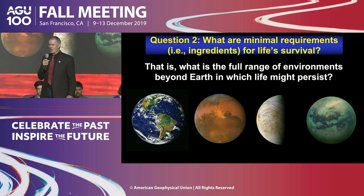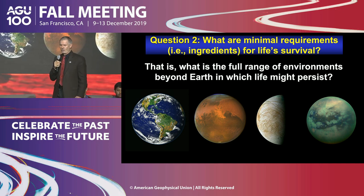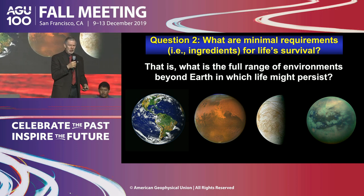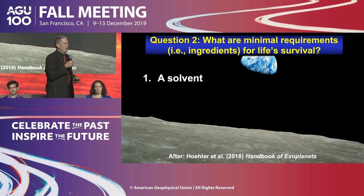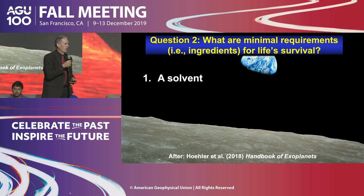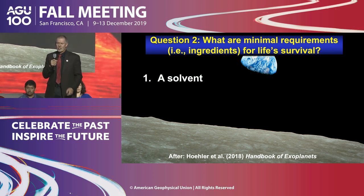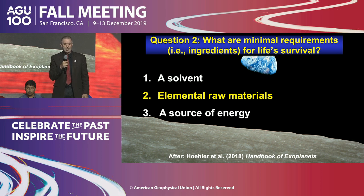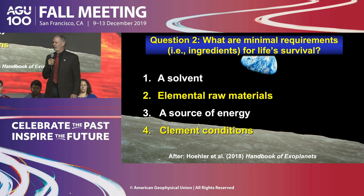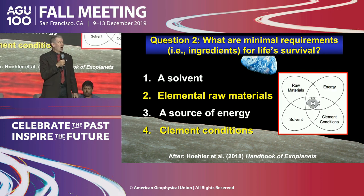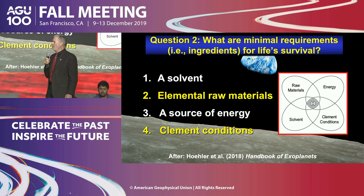The minimum requirements for life's survival asks about the full range of environments beyond Earth in which life might persist. Tori Holler and colleagues put out a paper giving those minimum requirements: a solvent, elemental raw materials, a source of energy, and climate conditions. If you have an intersection of those four essential requirements, you could have a habitable environment.